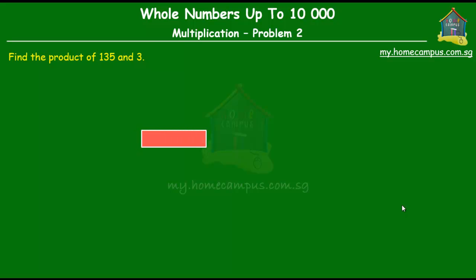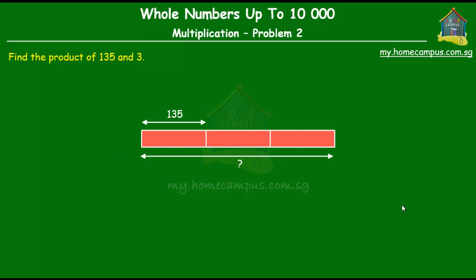If this is the unit that represents 135 on our model diagram, then what we need to find out is what is 3 times as much, which is the total of all of those 3 units. So that's 135 times 3. Let's learn how to actually carry out the multiplication.